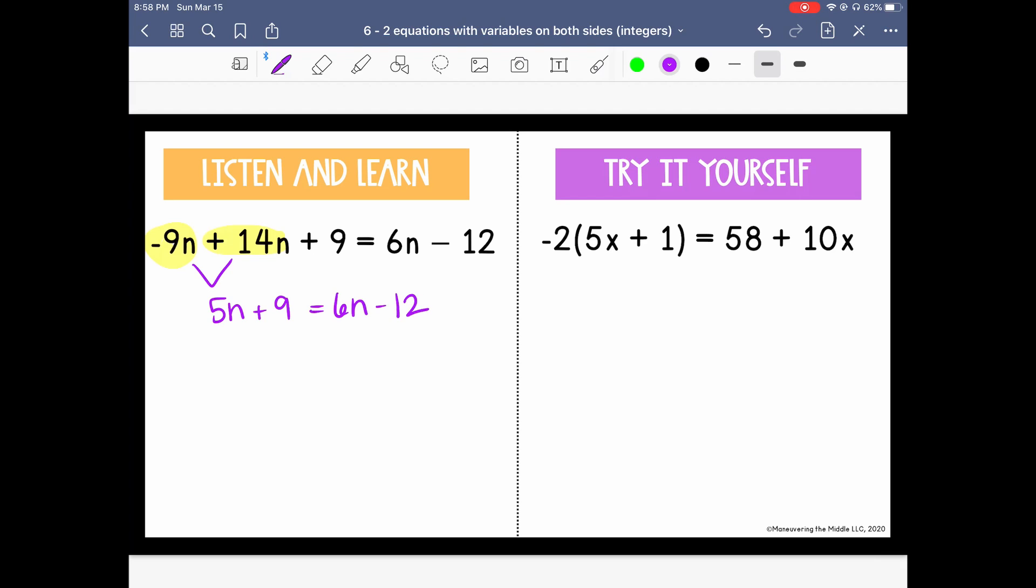And now I'm ready to collect my variables on the same side. So I'm going to collect them on the right since 6n is larger than 5n. So I'm subtracting 5n from both sides, which cancels it here. And we have 9 equals 1n minus 12.